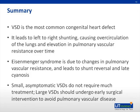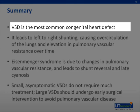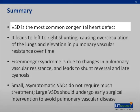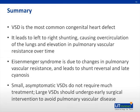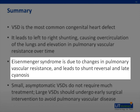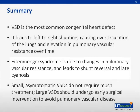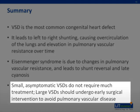In summary, VSD is the most common congenital heart defect. It leads to left-to-right shunting, causing over-circulation of the lungs and elevation in pulmonary vascular resistance over time. Eisenmenger syndrome is an important complication due to changes in pulmonary resistance that lead to reversal of the shunt and late cyanosis. While small asymptomatic VSDs do not require much treatment, large VSDs should undergo early surgical intervention to avoid pulmonary vascular disease.